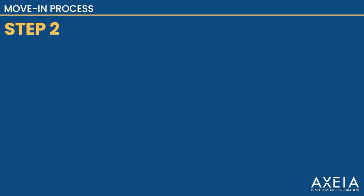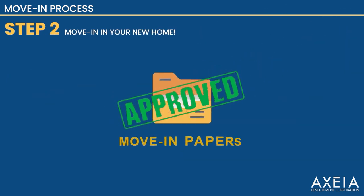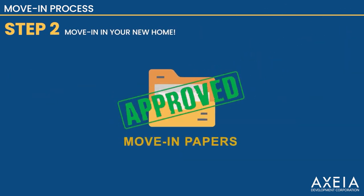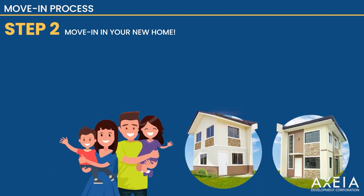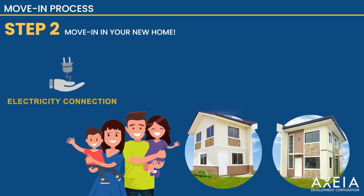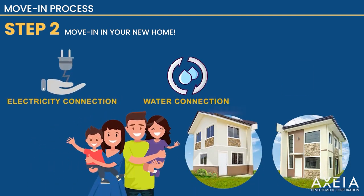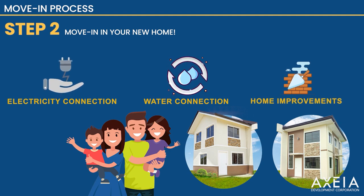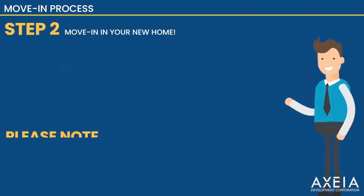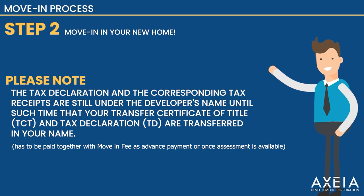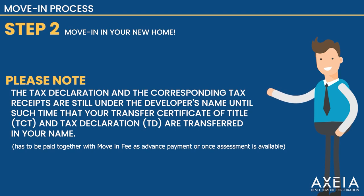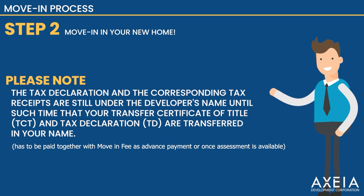Step 2. Once the move-in paper is approved, you can now move into your new home. You may now apply for electricity and water connection and make improvements in your unit. Please note that the tax declaration and the corresponding tax receipts are still under the developer's name until such time that your transfer certificate of title and tax declaration are transferred in your name.